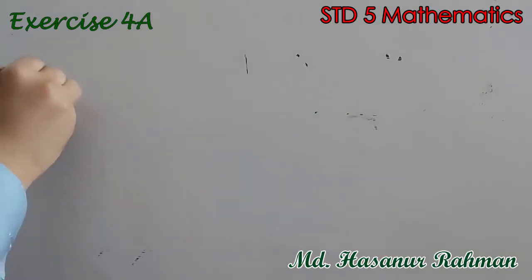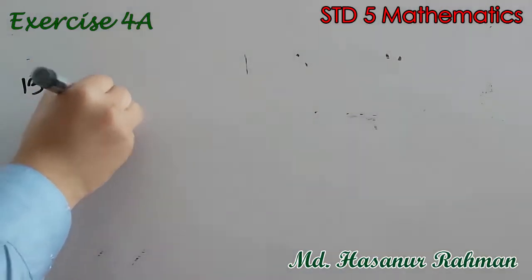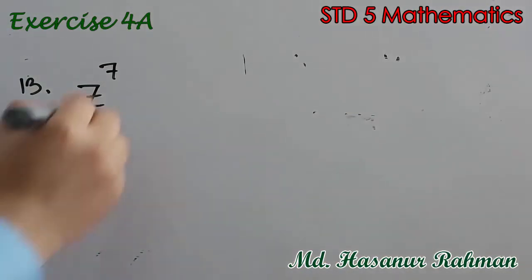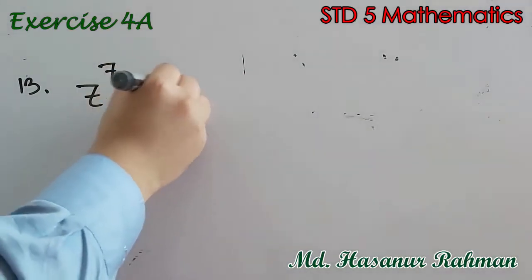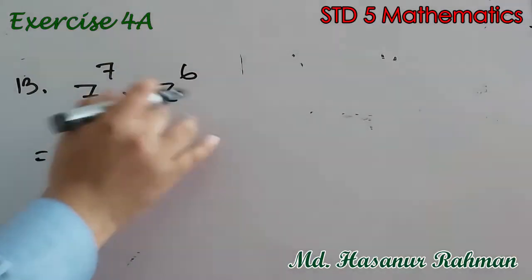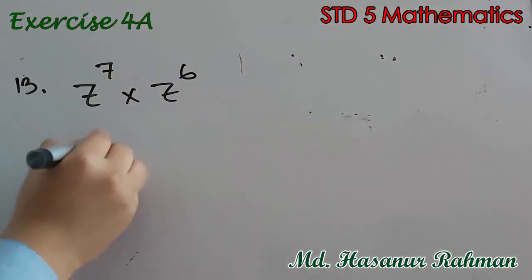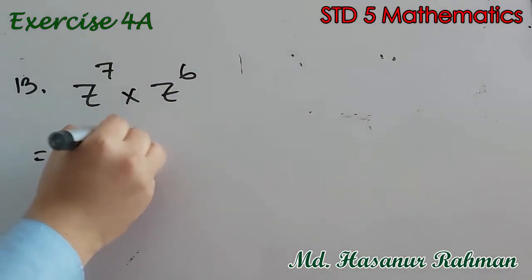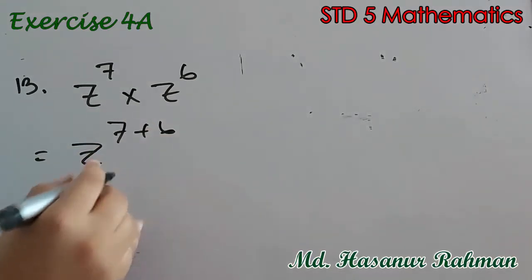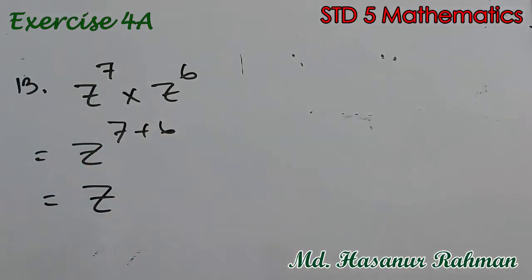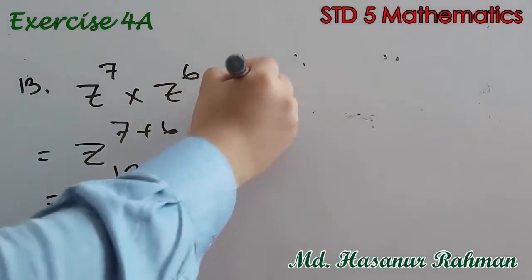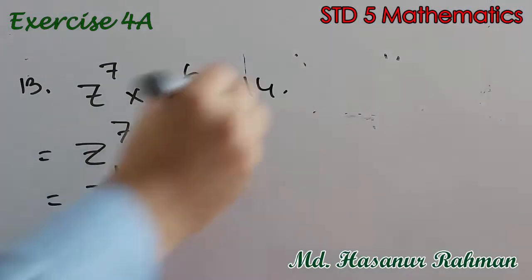Number 13 says z to the power 7 into z to the power 6. Same base, so we can add the powers: z to the power 7 plus 6. That means z to the power 13.